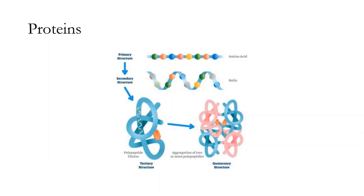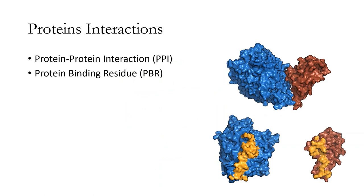The building block of proteins is called amino acids. There are about 20 different amino acids that create different proteins. The primary structure of proteins is the sequence of these amino acids. Proteins also have three more different structures. Secondary structure represents the local structure of the protein within itself, which mostly contains alpha helices or beta sheets. The tertiary structure of proteins is the 3D shape of proteins. The quaternary structure of proteins contains multiple chains of proteins, which is a protein complex.